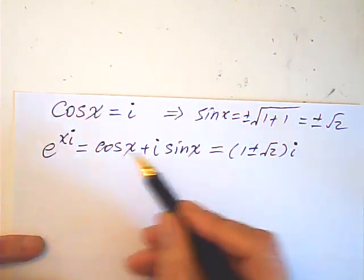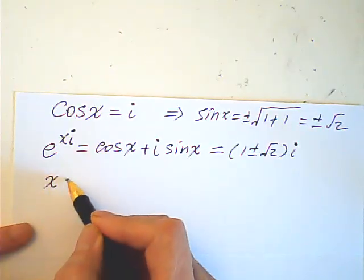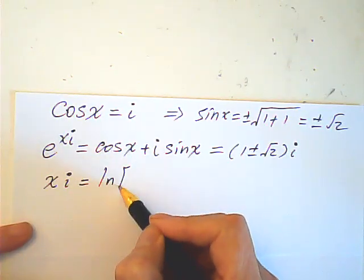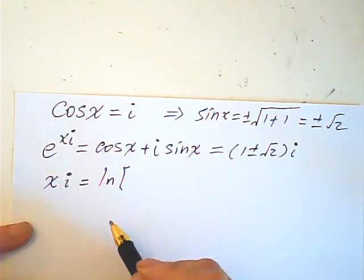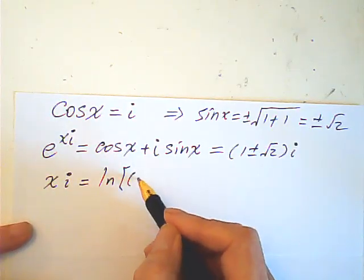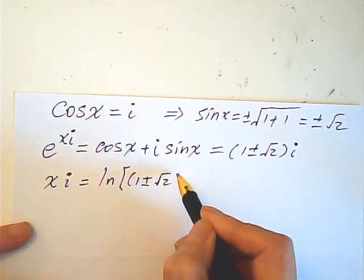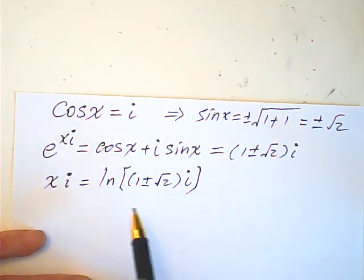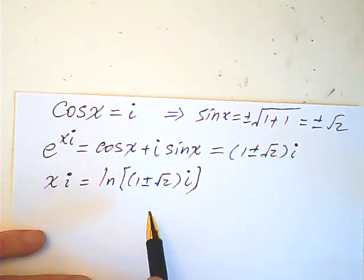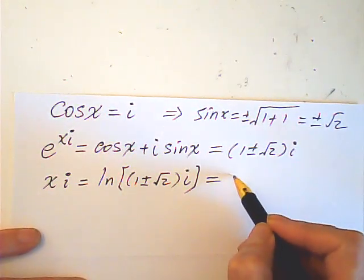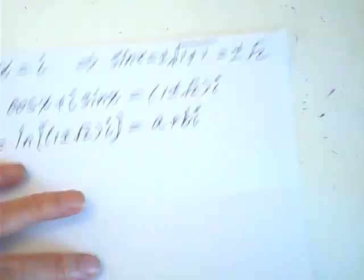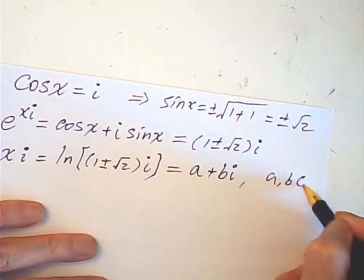Then, from this, we can find xi is equal to natural log of 1 plus or minus root 2 i, right? Obviously, this is a complex number. We let this complex number be a plus bi, right? And we know that a, b are real numbers.